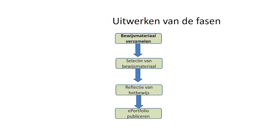Een e-portfolio wordt ontwikkeld in verschillende fasen. Als eerste verzamel je bewijs. Het bewijsmateriaal moet worden gekozen afhankelijk van de te bereiken doelstellingen en competenties. Het kan verschillende soorten informatie zijn: taken die in de klas zijn uitgevoerd, of informatie die in verschillende media is opgenomen. In de tweede fase selecteren we het beste werk van de studenten om het aan de leraar en de rest van de klasgenoten te presenteren.